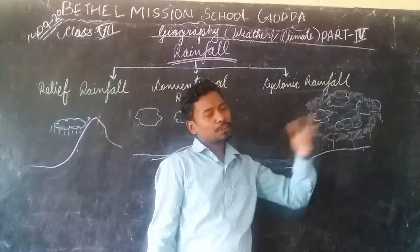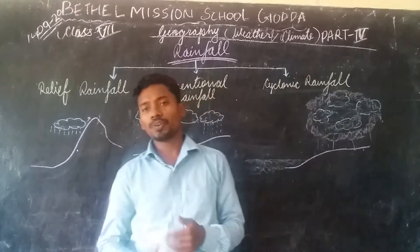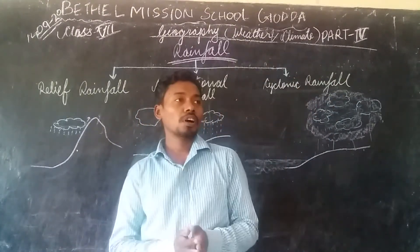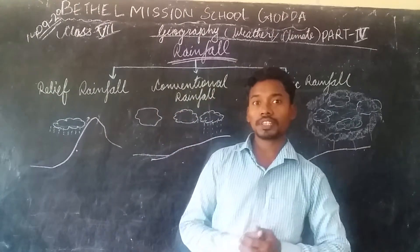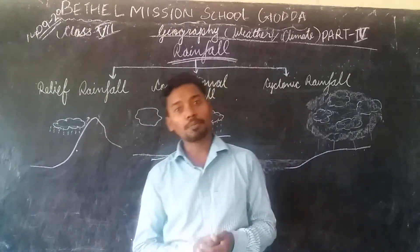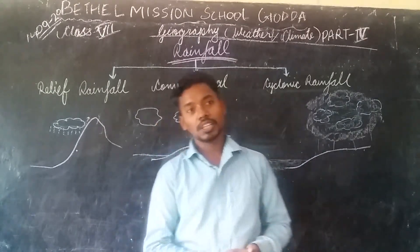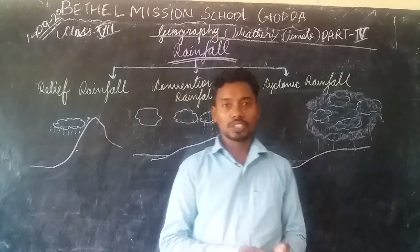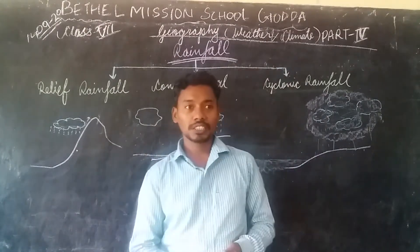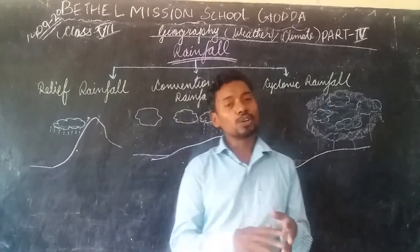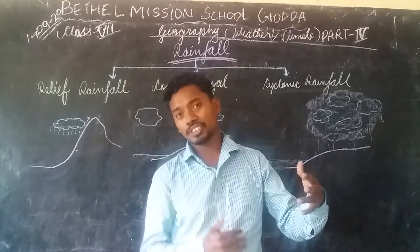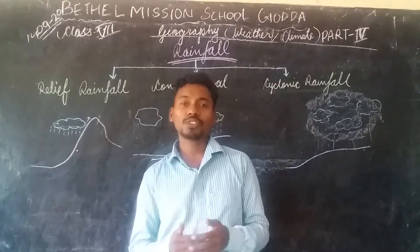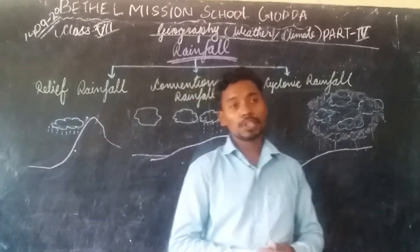In the previous videos we studied about different types of factors which affect the weather and climate of a place — for example, the temperature, winds, their flow, and the different pressure belts generated in the earth because of the difference in temperature.